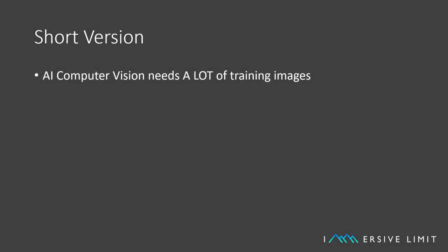If you only have a minute to spare, here's the short version. AI Computer Vision needs a ridiculous amount of annotated training images. These are really hard to gather. Alternatively, we can train AI with realistic, 3D-rendered image datasets.